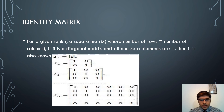For a given rank R, a square matrix where the number of rows equals the number of columns, if it is a diagonal matrix and all non-zero elements are 1, it is known as the identity matrix of rank R. For example, I1 is a single-element matrix with value 1, I2 is a 2×2 identity matrix, I3 is a 3×3 identity matrix, and so on up to IN.